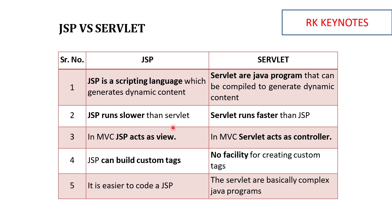Servlet is faster than JSP because servlet files are Java files — they are directly compiled, a class file gets generated, and it executes. In JSP, there is one extra step: the JSP file is converted to a servlet (Java file), then compiled, and then executed. Also, both follow MVC architecture — model view controller. JSP comes under view, and servlet acts as the controller.